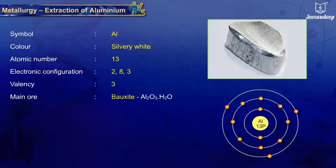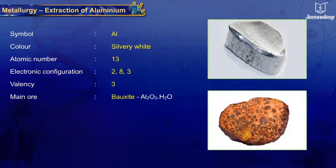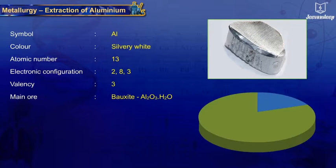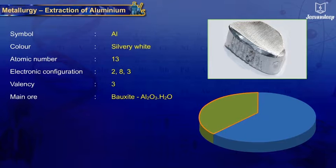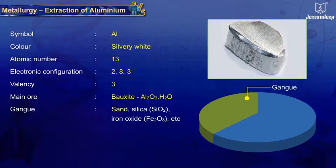The main ore of aluminium is bauxite, Al2O3·H2O, which contains approximately 30% to 70% Al2O3, that is alumina. The remaining portion is made up of gangue consisting of sand, silica (SiO2), iron oxide (Fe2O3), etc.